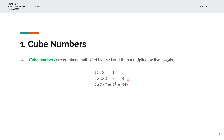And finally, with the number 7. We'll multiply by itself, which is 7, and then multiply by itself again, which is 7. So the notation for that is 7 to the power of 3, or 7 cubed, and that is equal to 343.